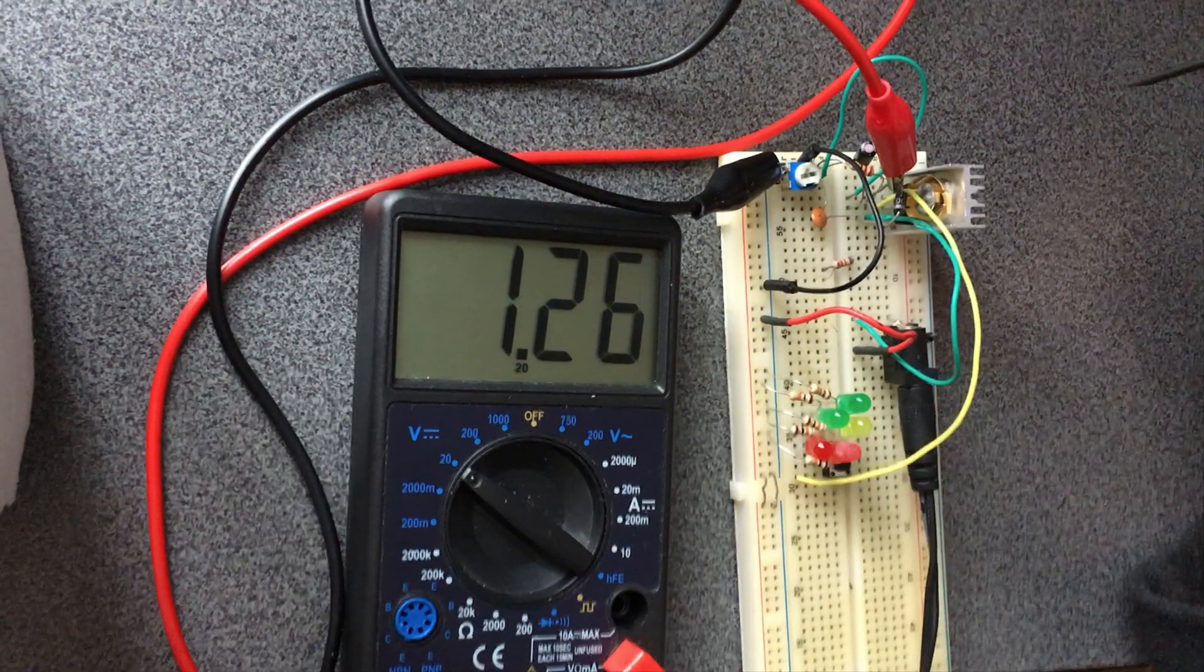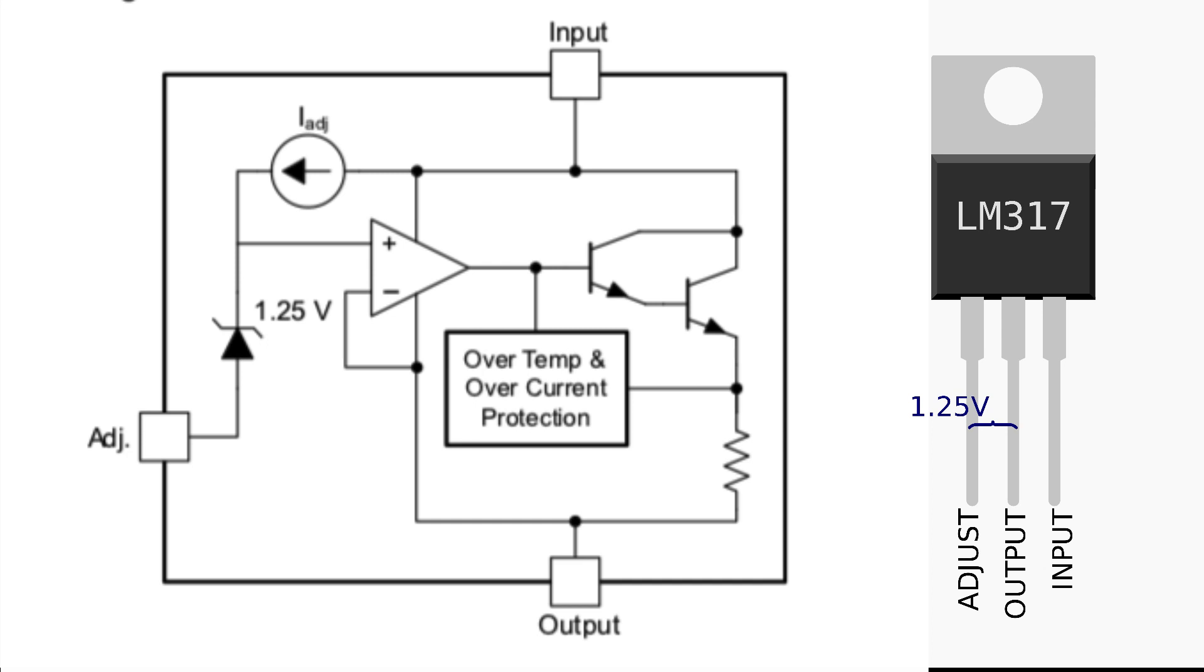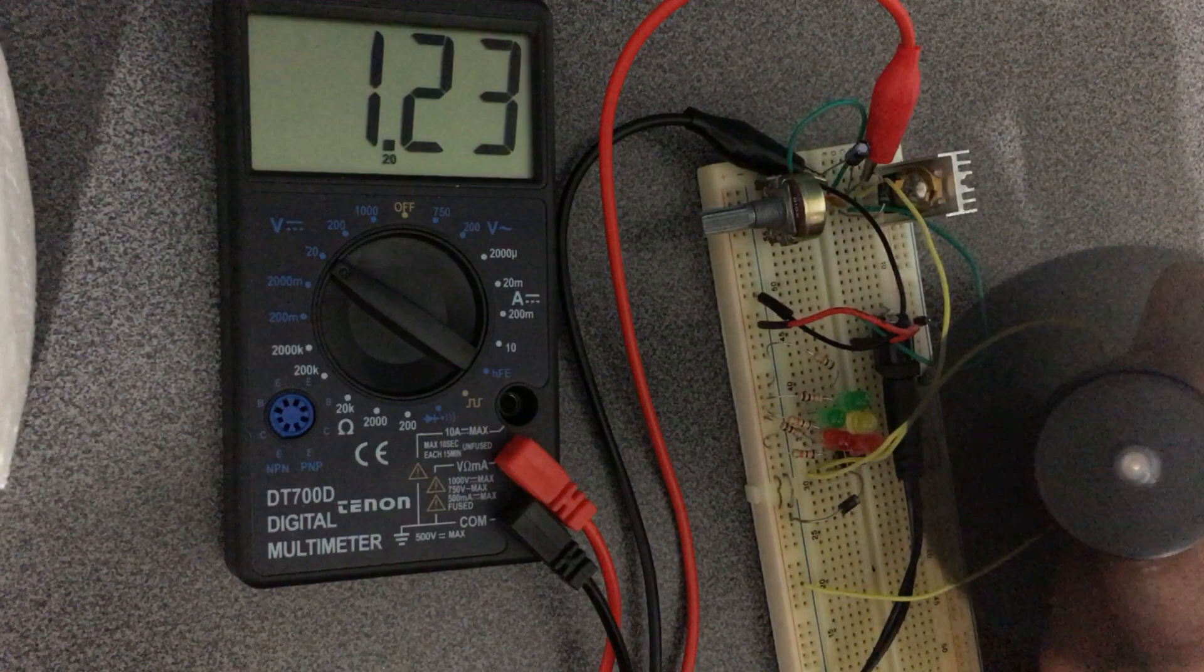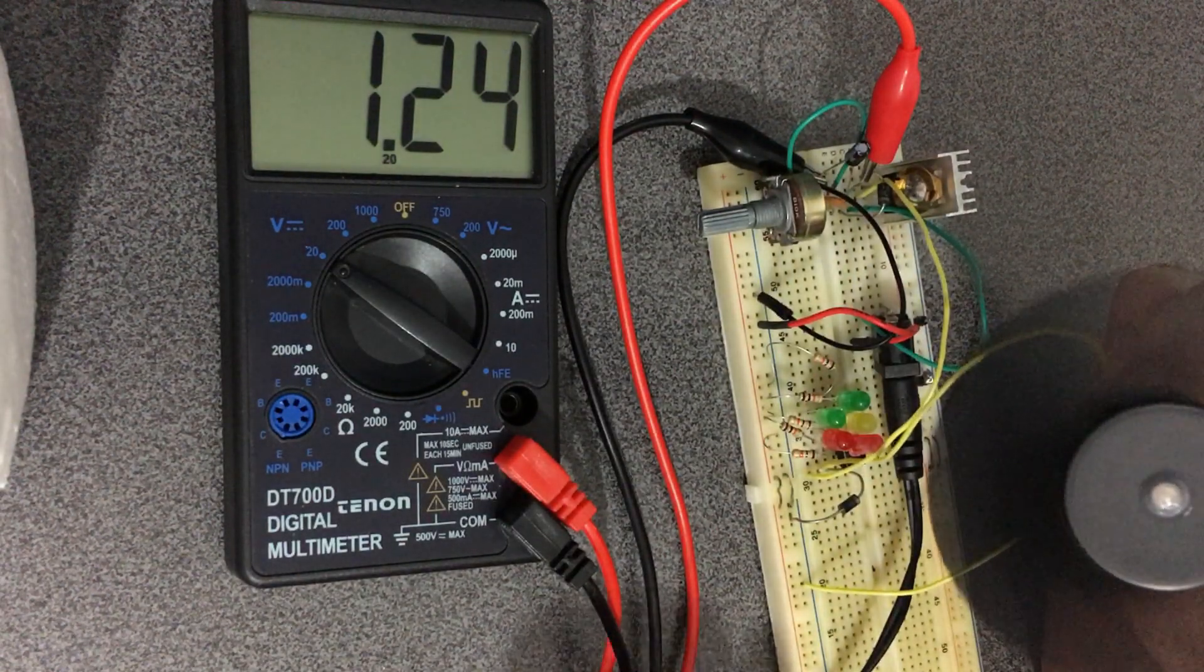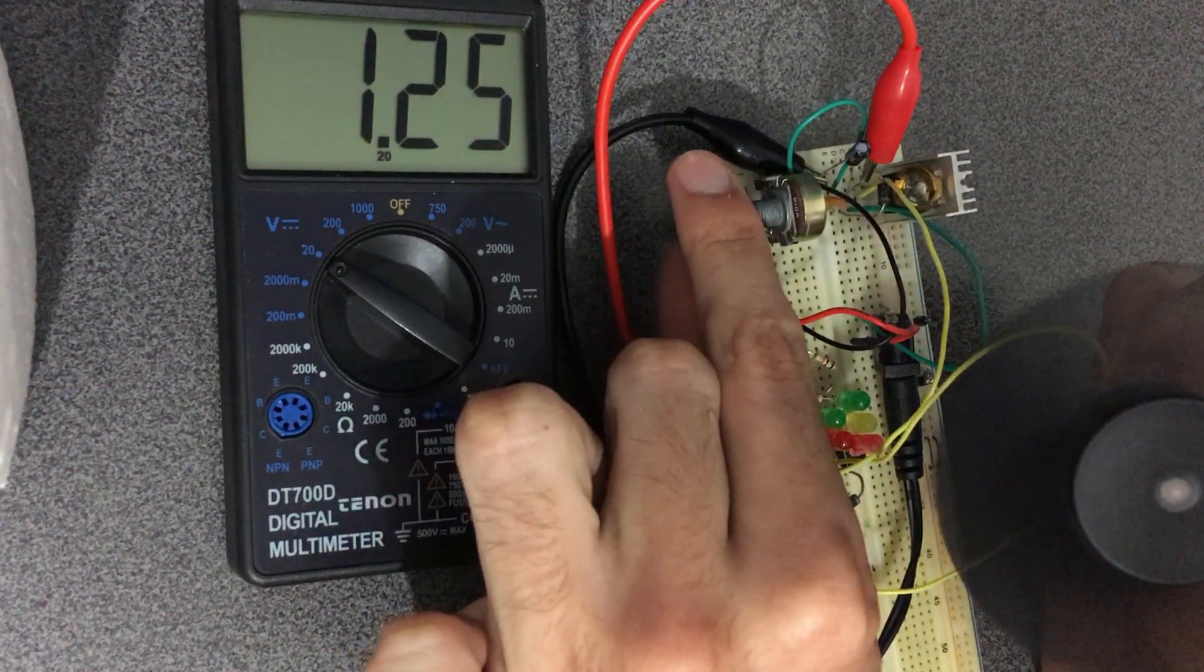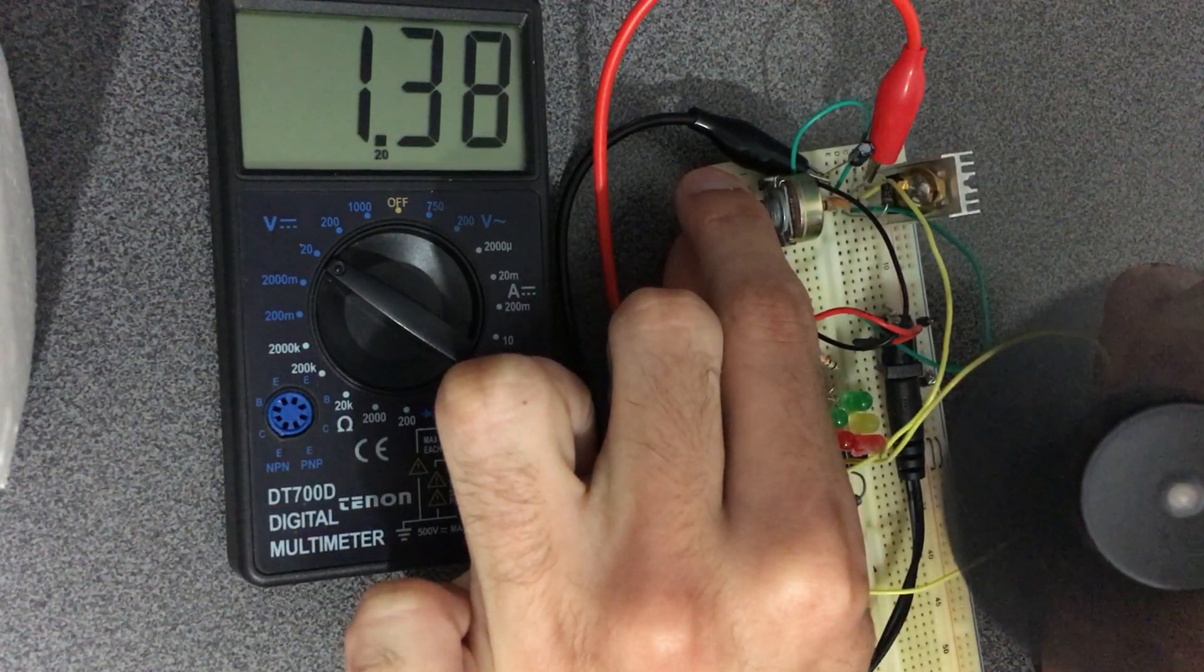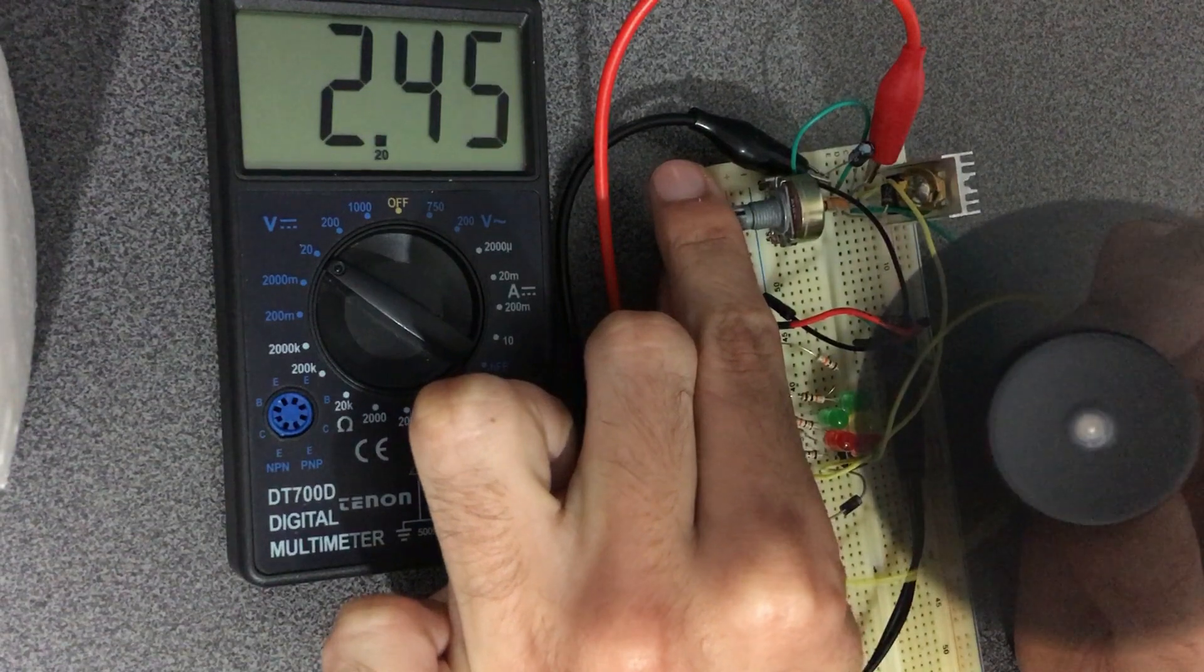Note that the output voltage won't go below 1.25 volts due to the reference voltage between the adjust pin and the output pin of the LM317. You can actually use this setup to control the speed of a motor, but make sure that you have a diode parallel to the motor to avoid any reverse voltage at the output which may damage your circuit.